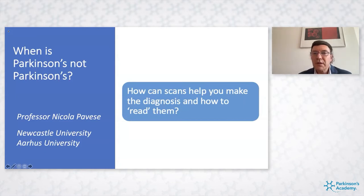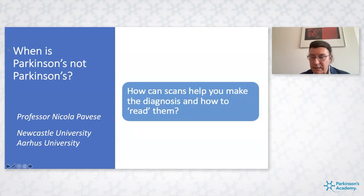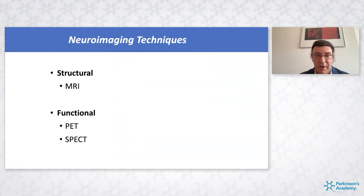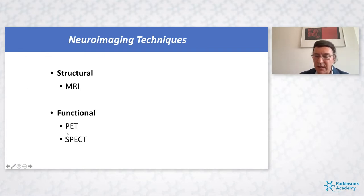I will continue talking about the diagnostic tests available in the clinic to make a better diagnosis of atypical parkinsonian syndromes. When we talk about imaging techniques we can think of structural and functional techniques. Structural techniques give images of the brain — like a photograph — and the example is MRI. Functional techniques enable us to look at how the brain works: PET is mostly used in research because it is quite expensive, and SPECT is more used in clinical settings.